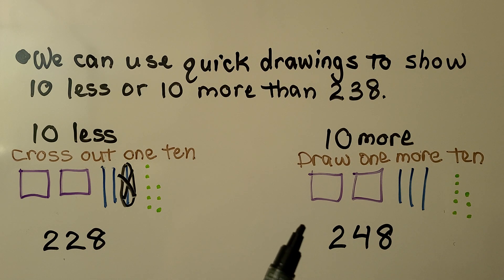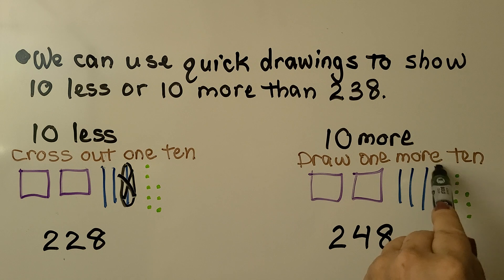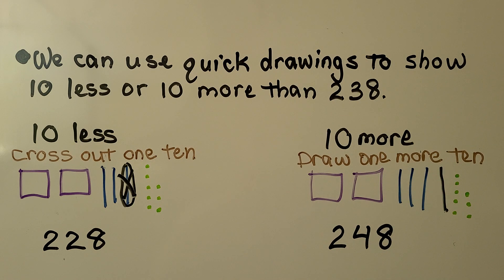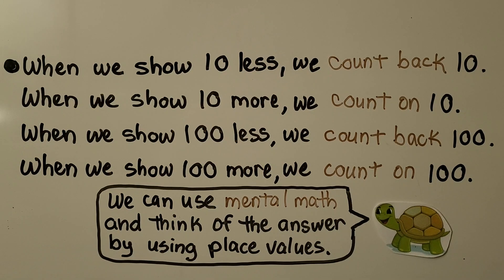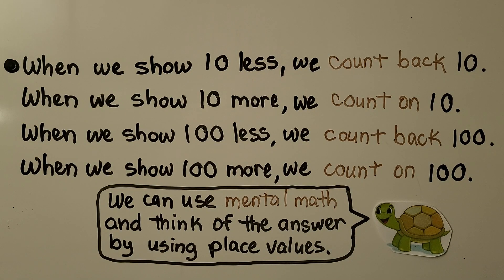For 10 more, we draw one more 10 — we just put another 10 here. We have 248. When we show 10 less, we count back 10. When we show 10 more, we count on 10. When we show 100 less, we count back 100. When we show 100 more, we count on 100.